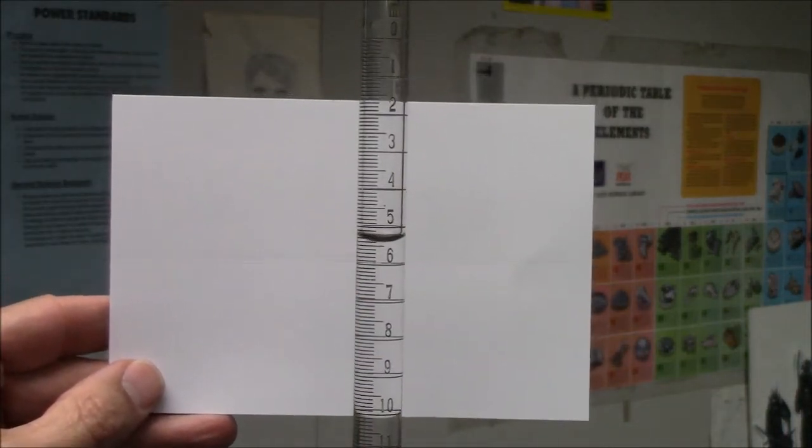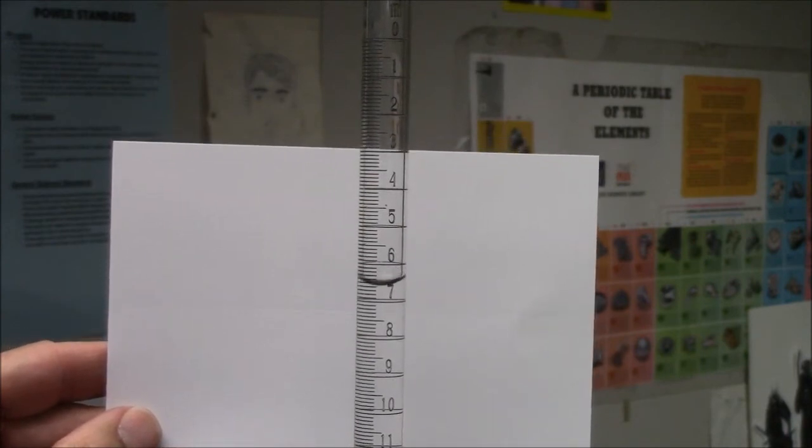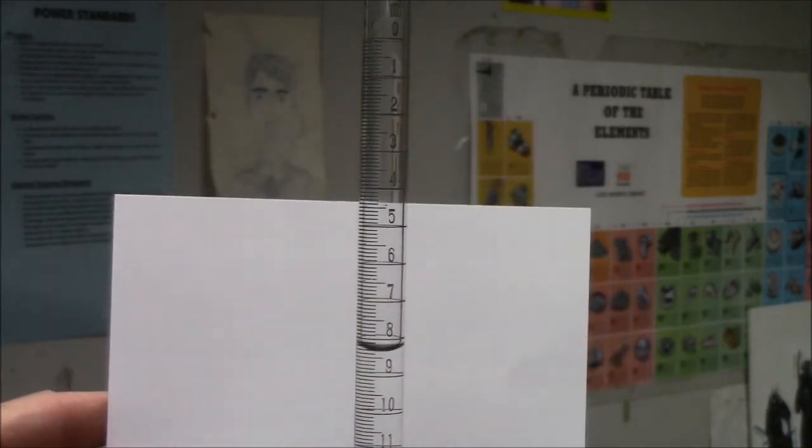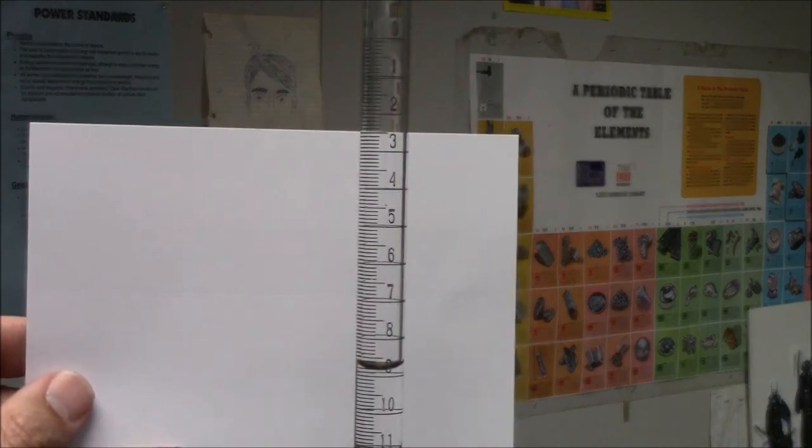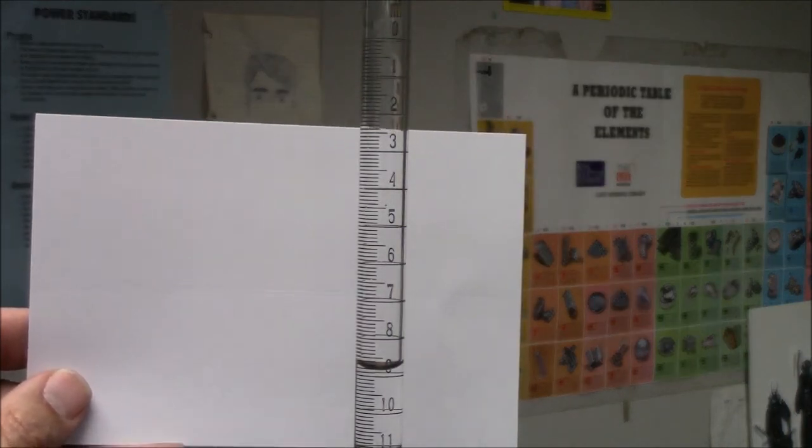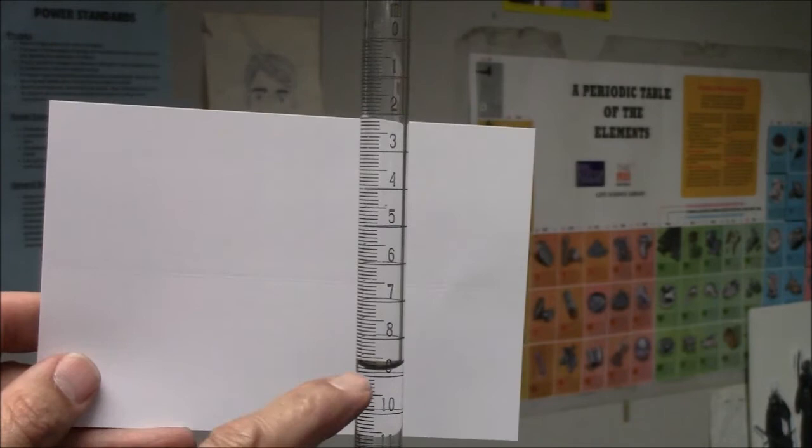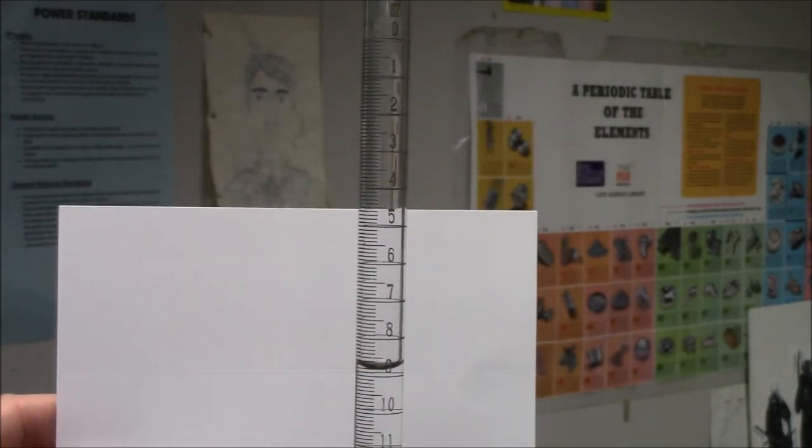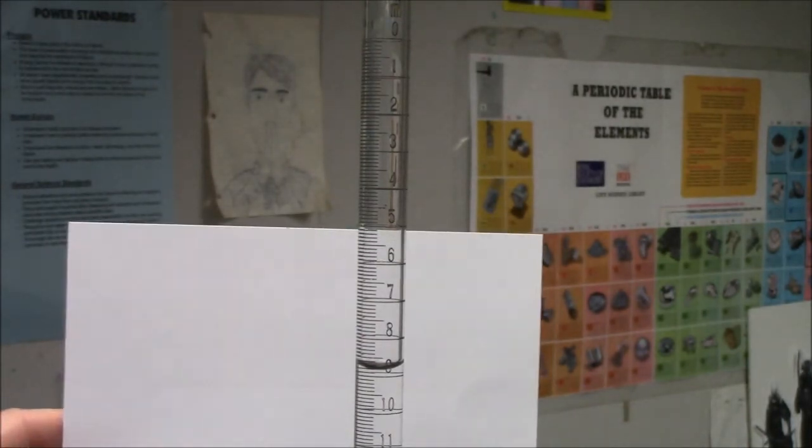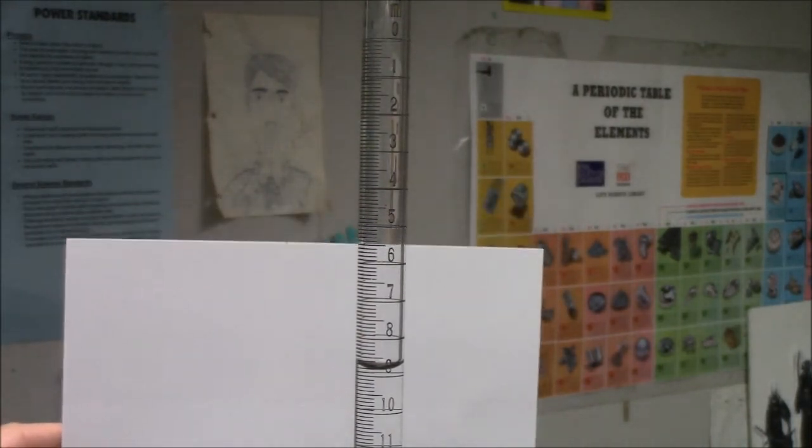I will now allow the solution to drop out. You can see the water level dropping. I've stopped it at eight point eight milliliters. Five point four to eight point eight. Three point four milliliters have come out of the burette. I never care what's in the burette. Only what's come out.